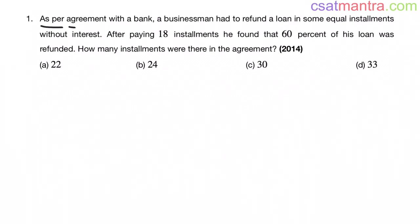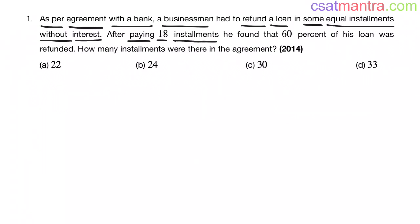As per agreement with a bank, a businessman had to refund a loan in some equal installments without interest. After paying 18 installments, he found out that 60% of his loan was refunded. How many installments were there in the agreement?